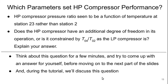So that raises an interesting question. What parameters end up setting the high pressure compressor performance? We see that it's a function of the temperature at station 2.3 rather than 2. Does this suggest that our HP compressor has an additional degree of freedom in its operation, or is it again ultimately constrained by T0.4 over T0.2 as the low pressure compressor is?